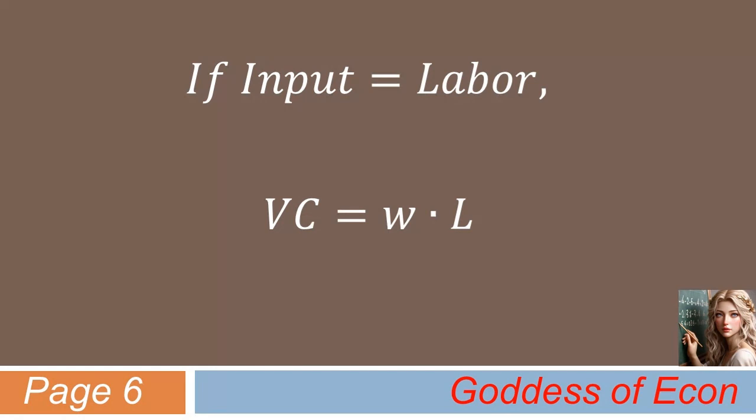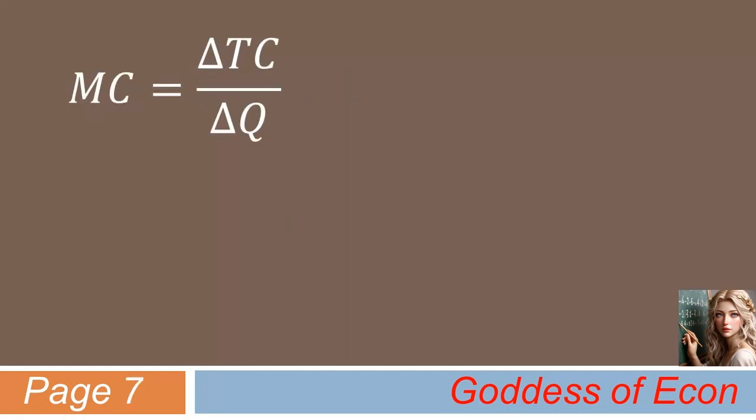Now, let us turn to the concept of marginal cost. Marginal cost is defined as the change in the total cost of production over the change in the quantity produced. In other words, it shows by how much the total cost of production would increase if the firm produced one more unit of output.